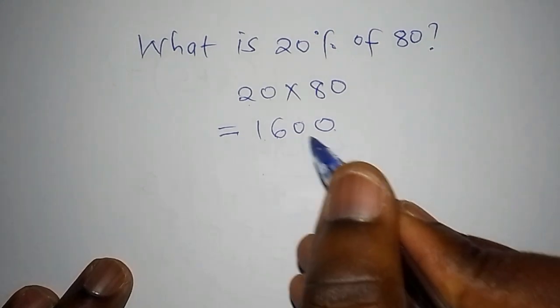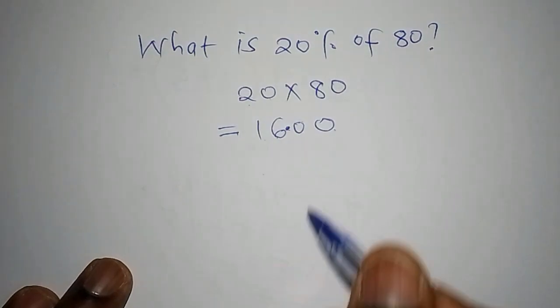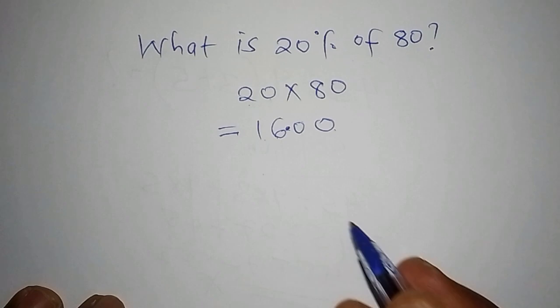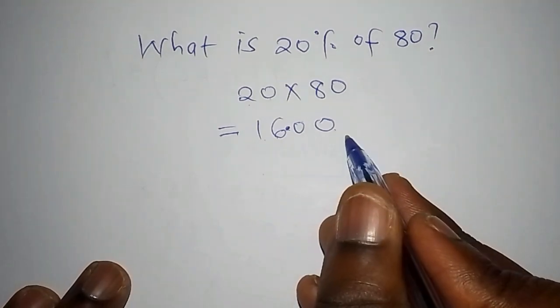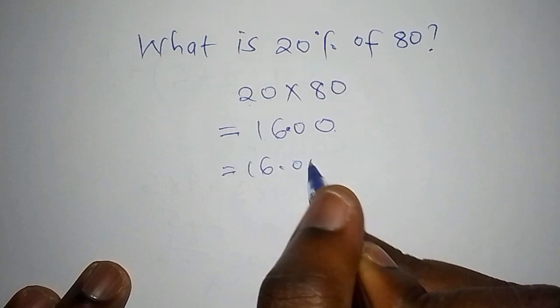Simply because you are just going to take two zeros and then you write your decimal point there. You count from the other side 1, 2, then 16 becomes there. So your answer becomes 16.00.